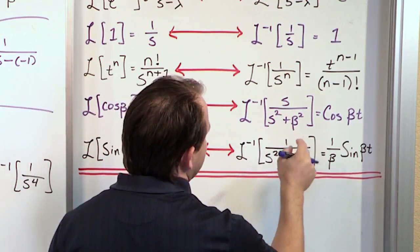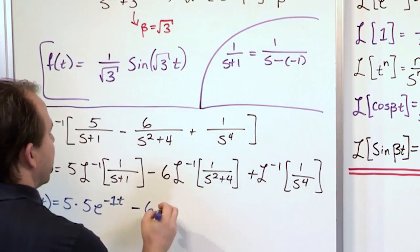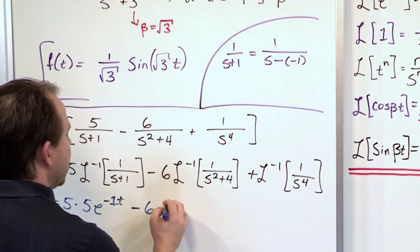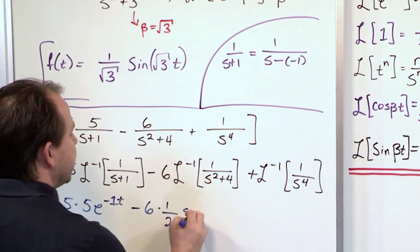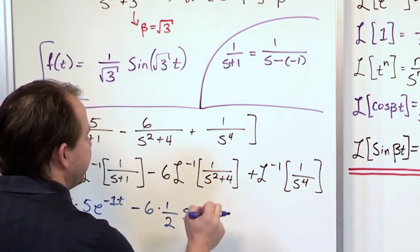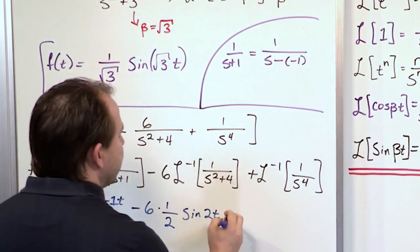Beta is going to be equal to 2. And this is the result, 1 over beta sine beta t. So what I'm going to have is 1 over beta. Beta in this case is 2. Sine of beta t. We actually said beta was equal to 2. So it would be 2t.